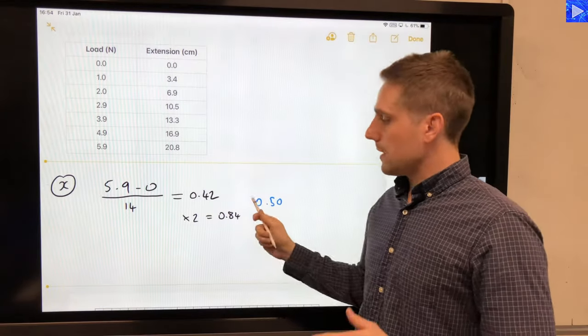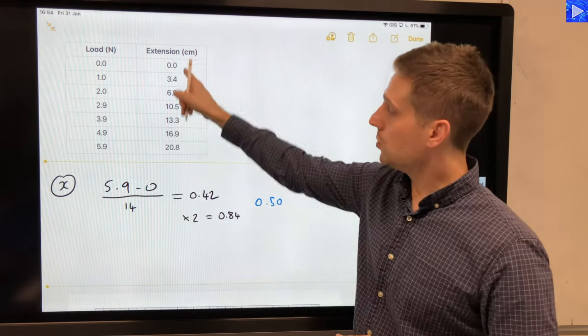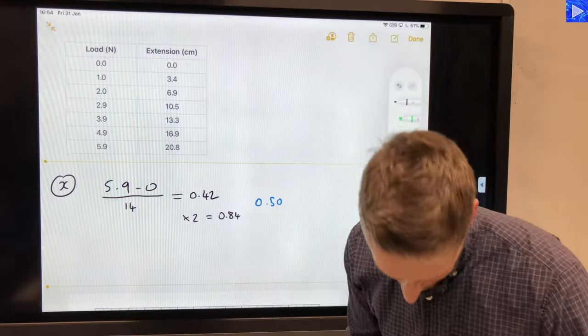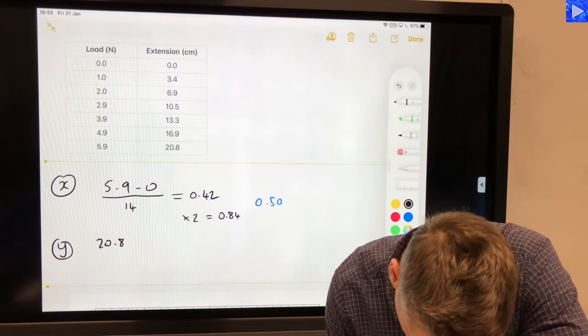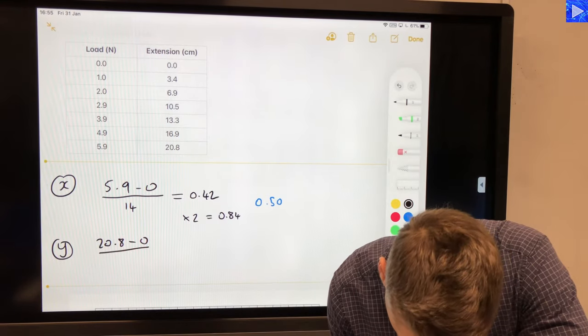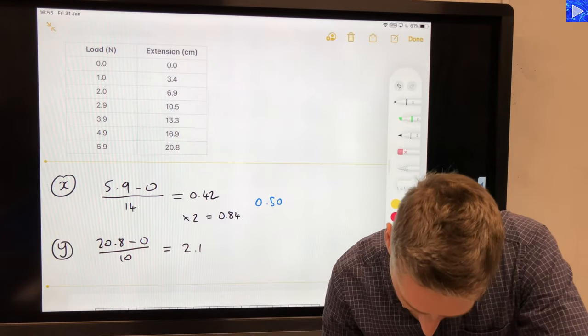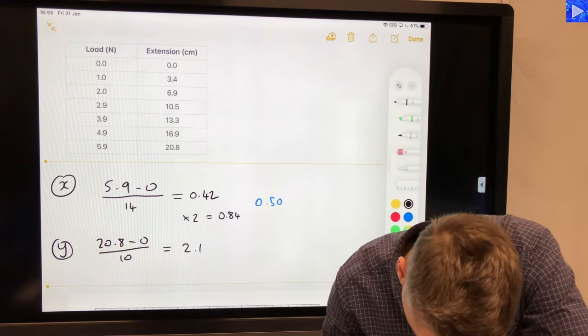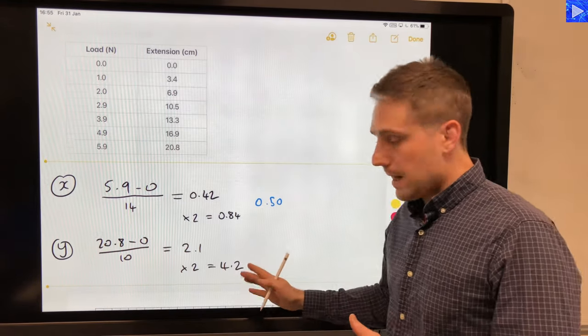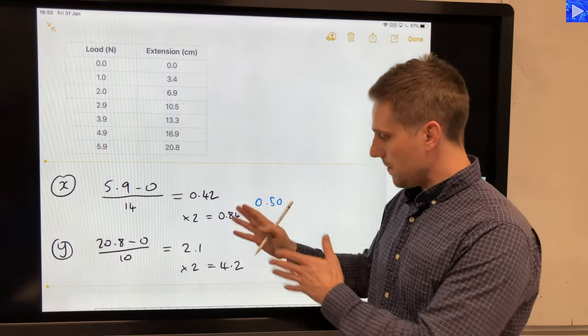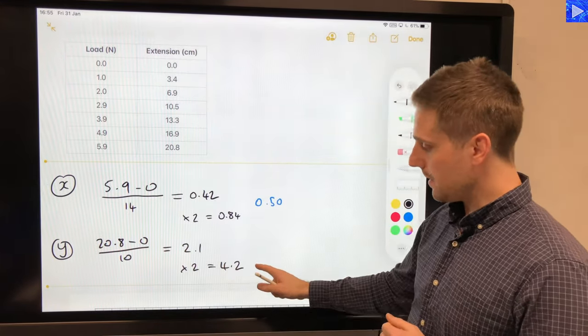I'm going to repeat the process for the y data, the extension. So in the y direction we have 20.8 minus 0 again divided by 10—2.1, so 2.08 but 2.1—and if I multiply that by 2, 4.2.